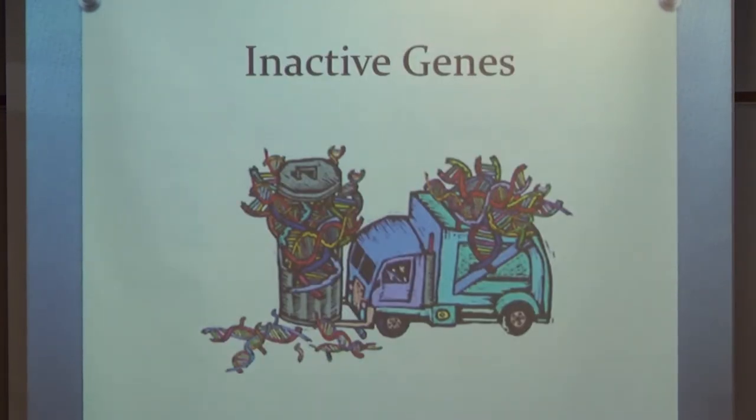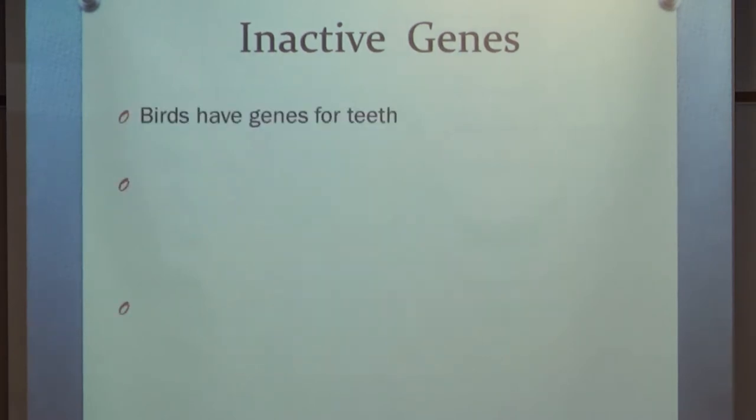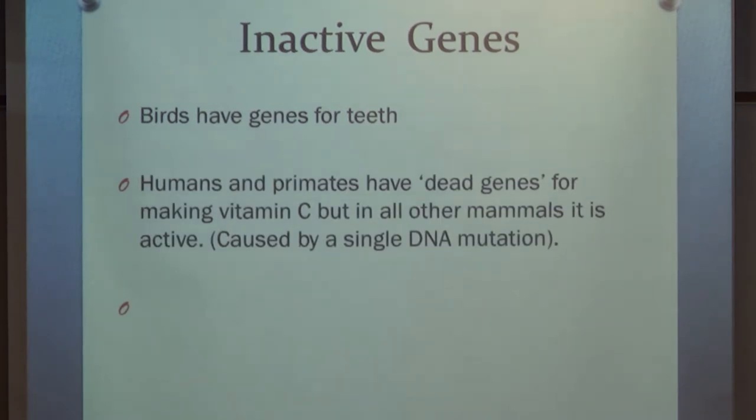And speaking of vestigial things, this goes all the way back down to molecular biology, of course. So, we have genes that we no longer need. Birds have genes for teeth. Modern birds only have beaks. Why on earth do they have genes for teeth? Because they inherited them from their ancestors. They no longer need them. But, there's a couple of cool examples here. Humans and primates don't have a functional gene for making vitamin C. That's why we need to eat oranges or we get scurvy. Because there's a single DNA mutation in the vitamin C production gene in humans and primates only. So, why do we have this gene if it's not functional?